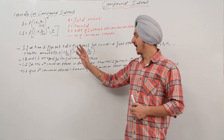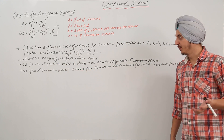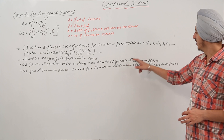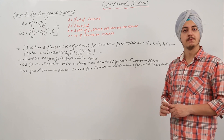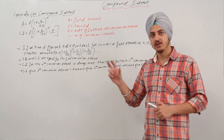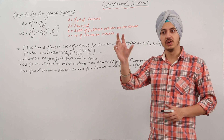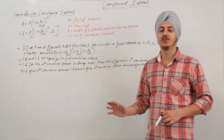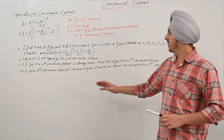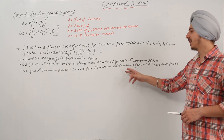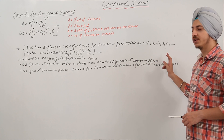The compound interest for the Nth period is always more than the compound interest for the N-1th conversion period. This means the compound interest for the third year will always be greater than for the second year, the compound interest for the fifth year will always be greater than for the fourth year, and so on.